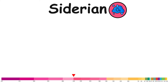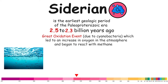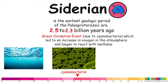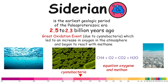Siderian. The Siderian is the earliest geologic period of the Paleoproterozoic era, spanning from approximately 2.5 to 2.3 billion years ago. During this period, the Great Oxidation Event occurred due to cyanobacteria, which led to an increase in oxygen in the atmosphere, and began to react with methane forming carbon dioxide and water, which led to the planet cooling rapidly and causing it to freeze.